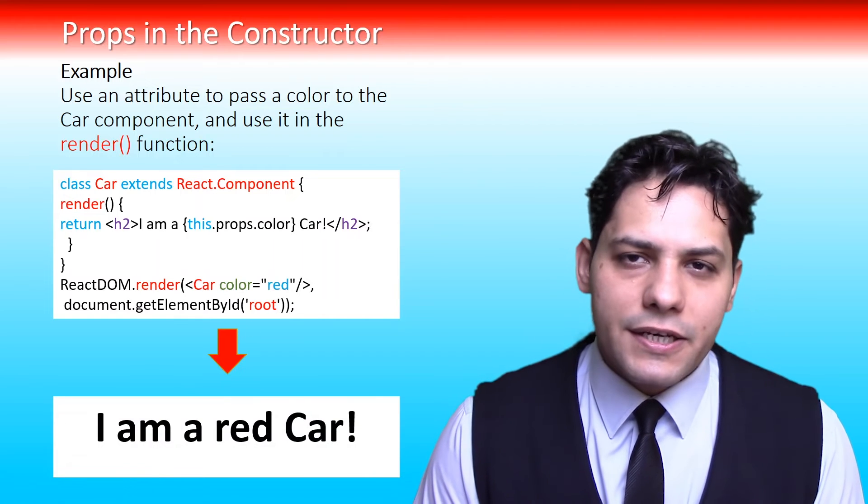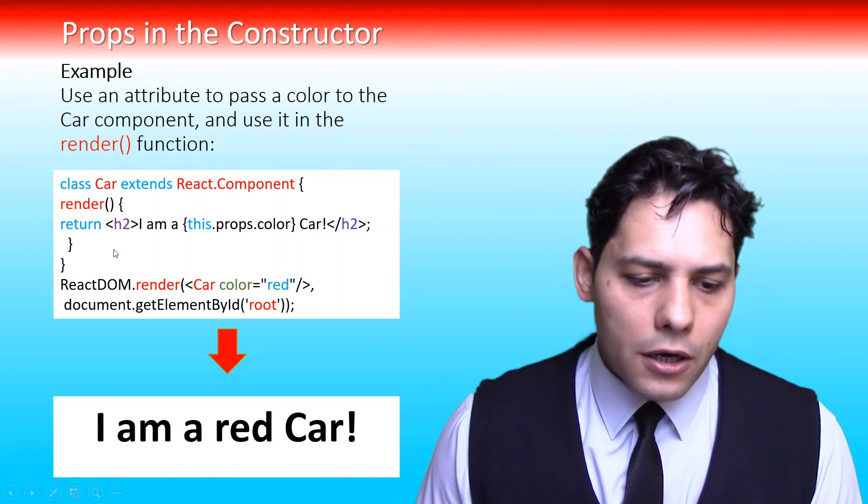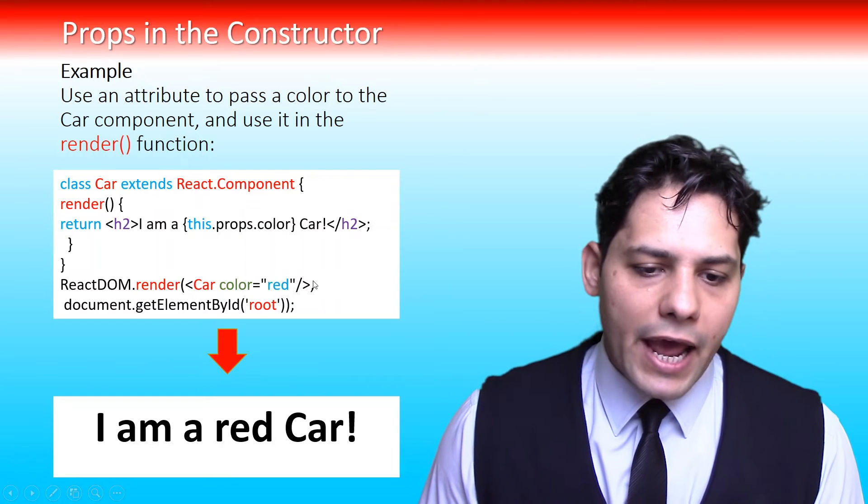As you can see, in this way we passed a color to the car component and used it in the render function. And it's our result: I am a red car.